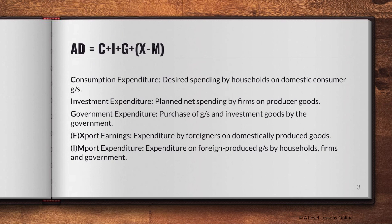AD is defined as C + I + G + X − M. First, C stands for consumer expenditure or consumption expenditure — essentially what consumers spend. It is the desired spending by households on domestic consumer goods and services. Consumption always refers to domestic goods and services, which is why there is a separate component later for imports and exports covering the foreign sector.